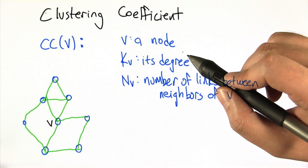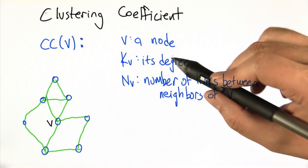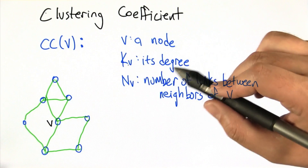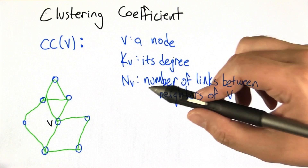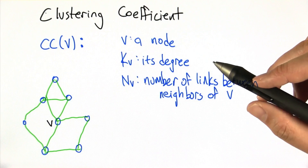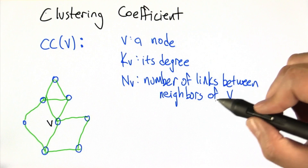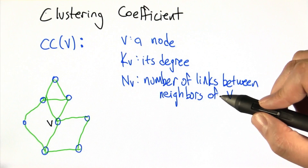So let's say v is that node, k_v is its degree, and n_v is the number of links between the neighbors of v.